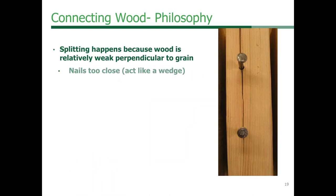Tension perpendicular to grain is also caused by closely spaced fasteners. When nails are spaced closely together, they act as a wedge — driven into the wood, they can pry the grain apart. That's why we want to stagger the nails with the grain of the wood. Instead of having nails all aligned along the same row of straws, we stagger them so that the next nail is offset from the previous one.